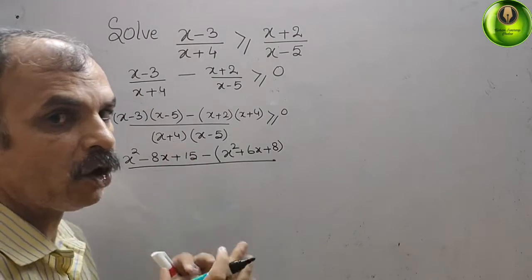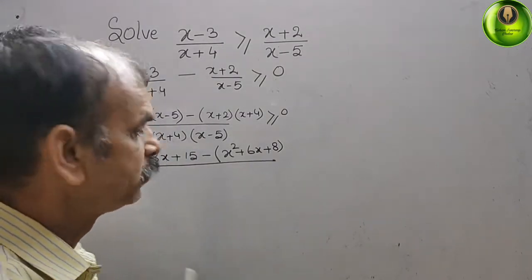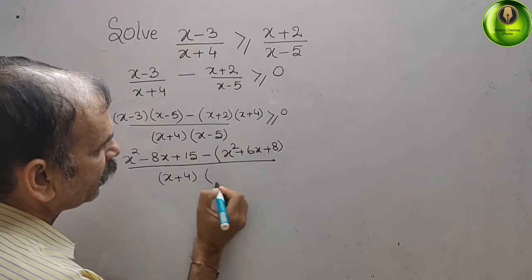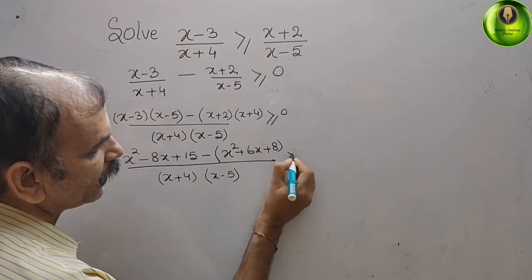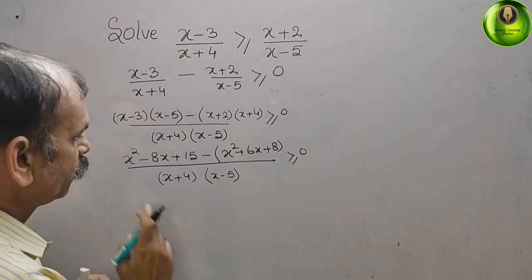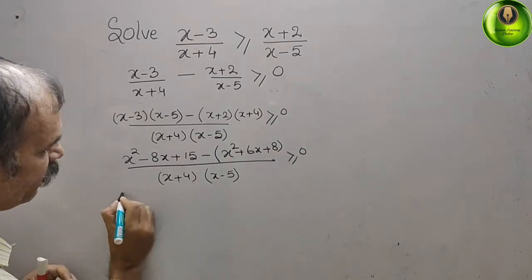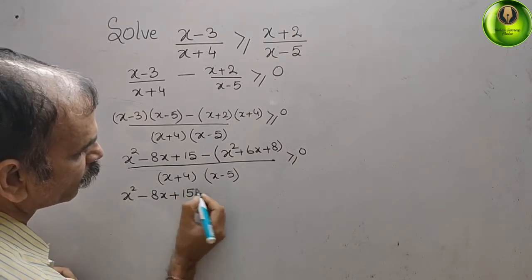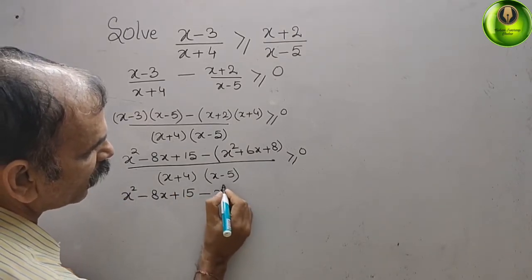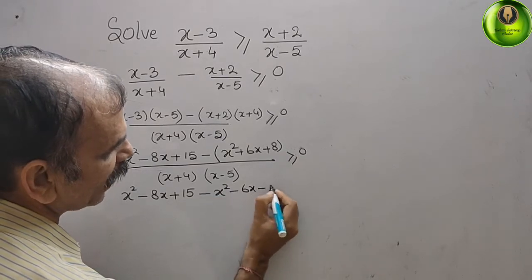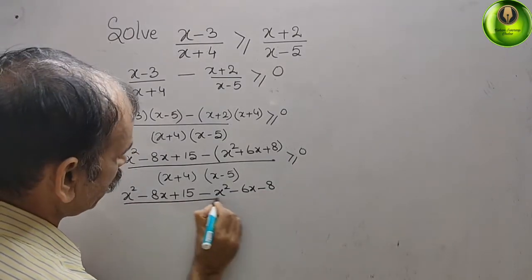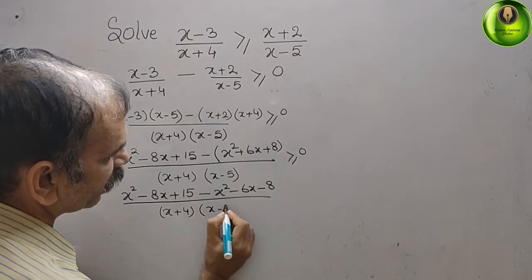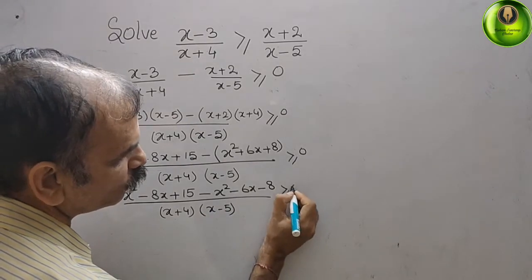Don't expand the denominator — they are already in factors. So we write (x plus 4) into (x minus 5) in the denominator. Opening the bracket in the numerator: x squared minus 8x plus 15, minus x squared minus 6x minus 8, by (x plus 4) into (x minus 5), greater than or equal to 0.